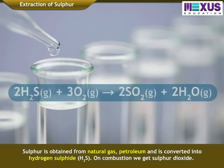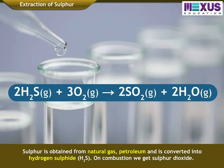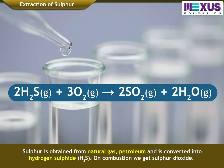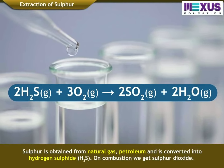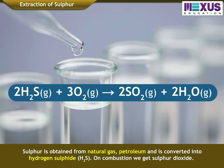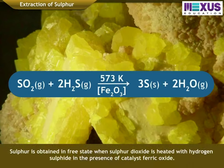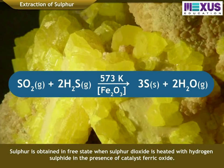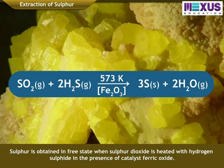Sulphur is also obtained from natural gas and petroleum, where it is converted into hydrogen sulphide, H2S. On combustion, we get Sulphur Dioxide. Sulphur is obtained in free state when Sulphur Dioxide is heated with hydrogen sulphide in the presence of catalyst ferric oxide.